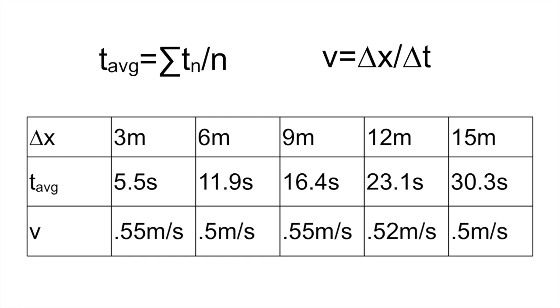Your teacher has also passed out a table regarding average time for each distance. This can be recorded by taking the sum of all three times at the specific distance and dividing by three.